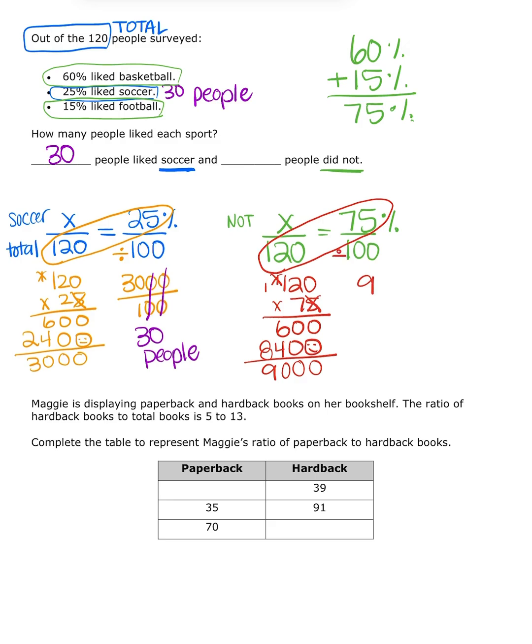And then I divide by my extra number, 9,000 divided by 100. The good news there again, I have zeros that match, so I can cross them off. And I end up with 90 people that don't like soccer, 90 people.